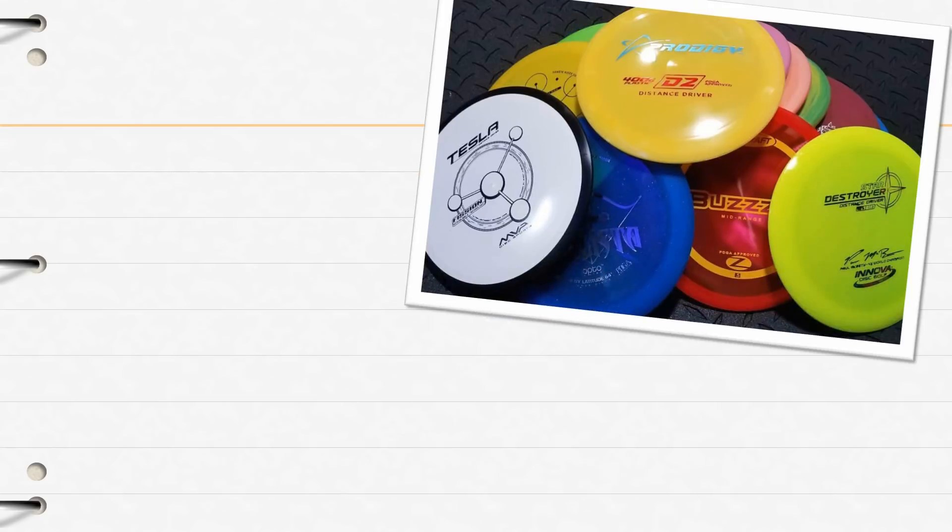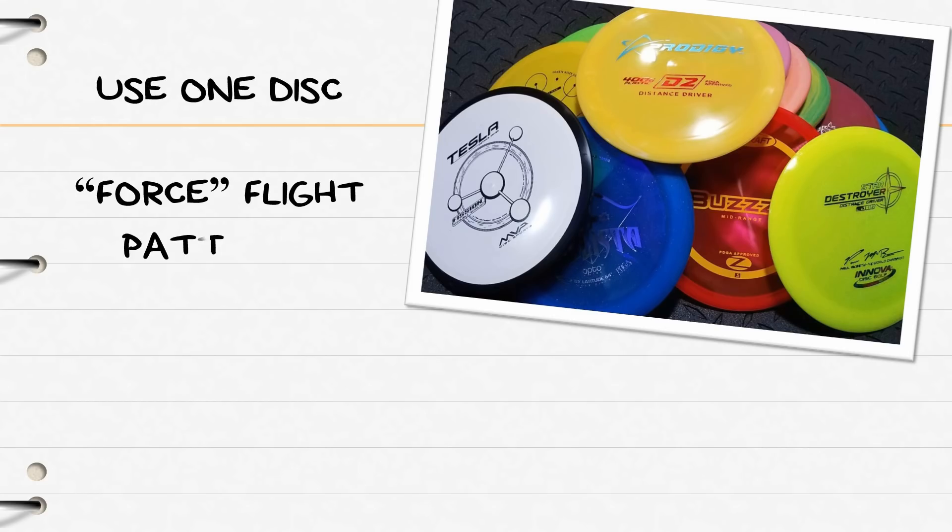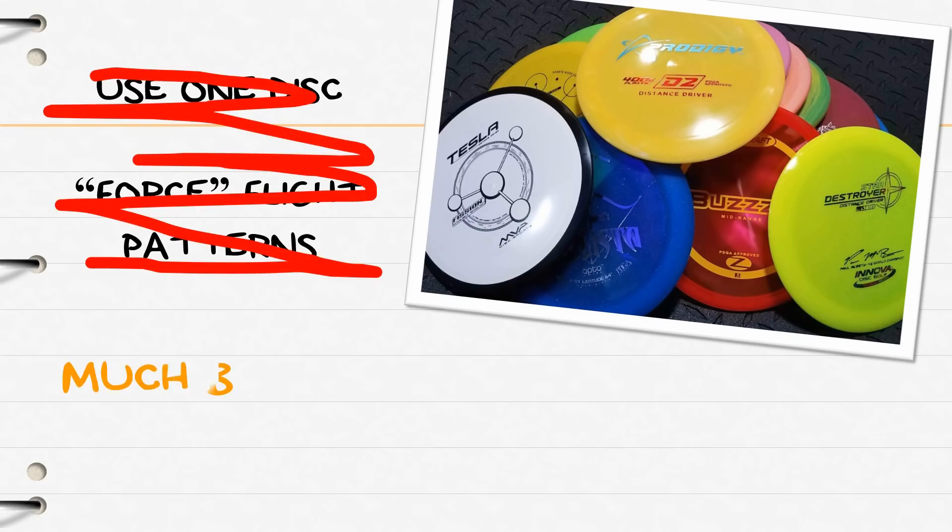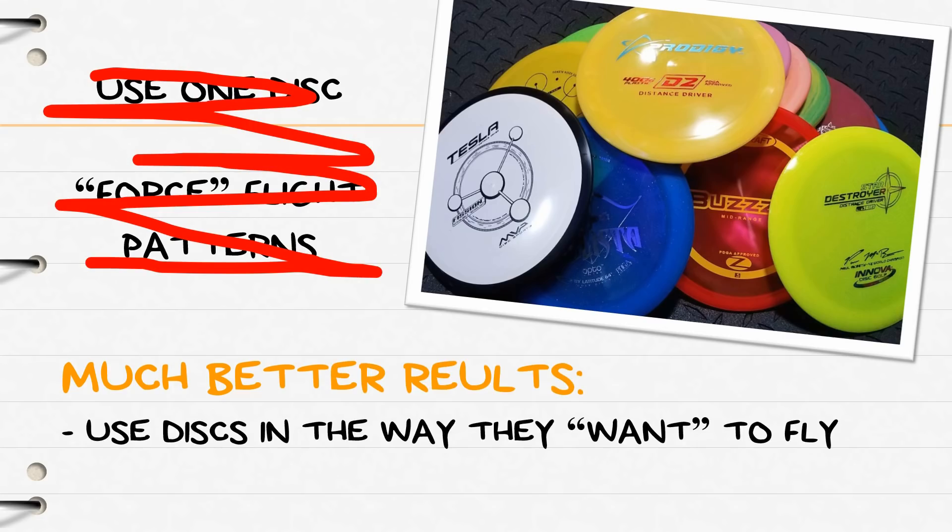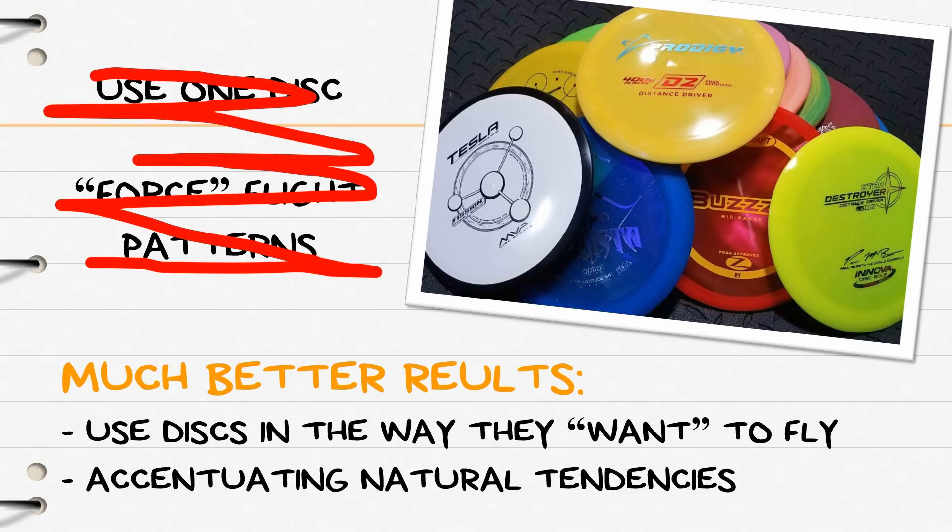Many players have a full bag of discs but also tend to favor just one disc that they force into different flight patterns by altering their release angle. While this strategy can be moderately effective, a much better result will come from using discs in the way they want to fly and by accentuating the natural tendencies of the disc.